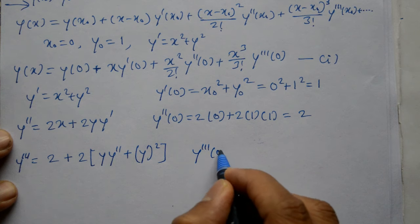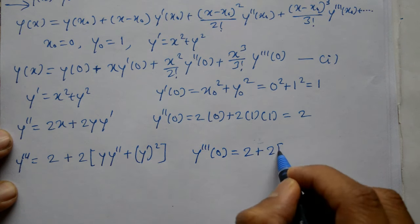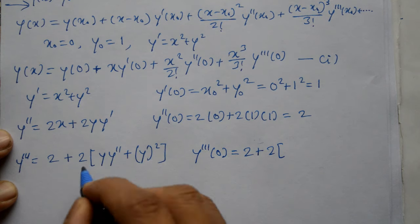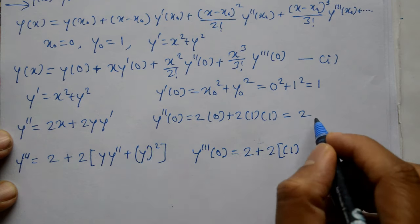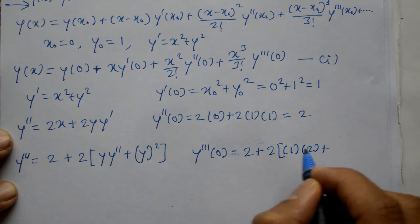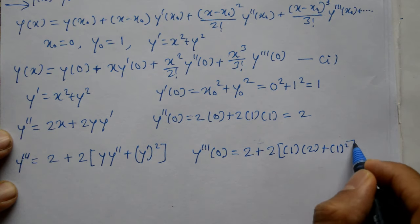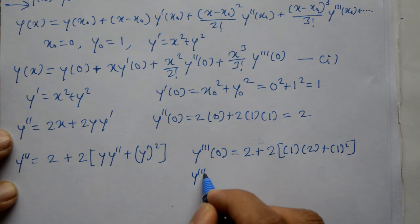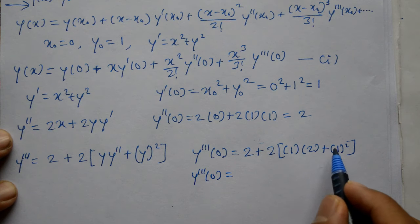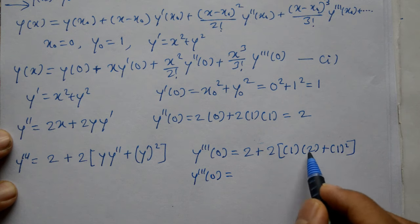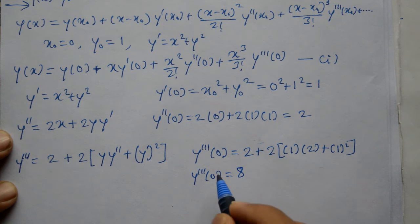y triple dash of 0 kya to: 2 rahega, baad me 2 bahar ayega — y(0) = 1, y''(0) = 2, plus y'(0) = 1, y' square kya to 1 square ayega. So y'''(0) = 2 + 2(1·2 + 1²) = 2 + 2(3) = 2 + 6 = 8.